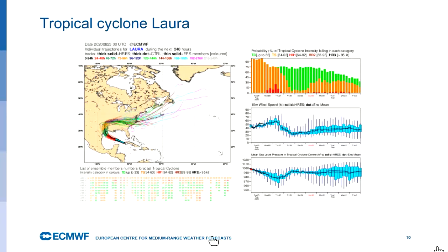If you can see the map on the left-hand side, these show what we call the plumes — the tracks of the 51 members of tropical cyclone Laura within our forecast system. The different colours of the lines represent different forecast periods: the black lines represent the ensemble for yesterday, the red lines for today, and the green for tomorrow. So day one in black, day two in red, and green is day three. Then the system moves into the United States — quite a significant system for Texas and Louisiana and many of the people that live there.